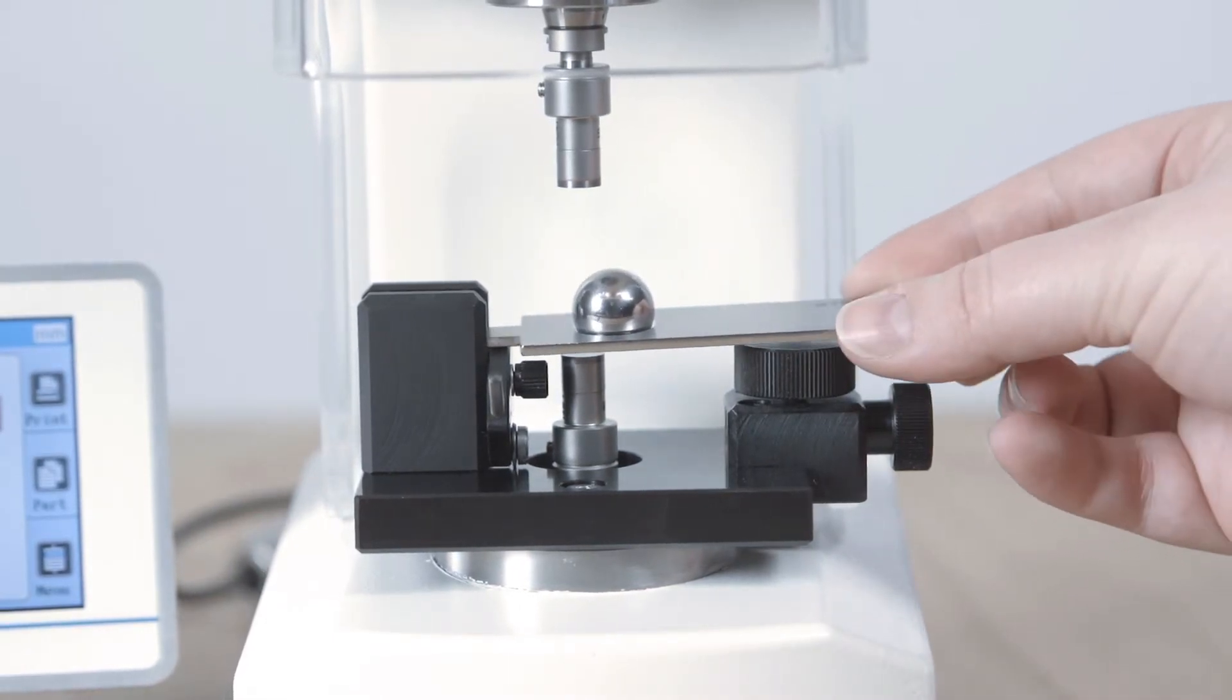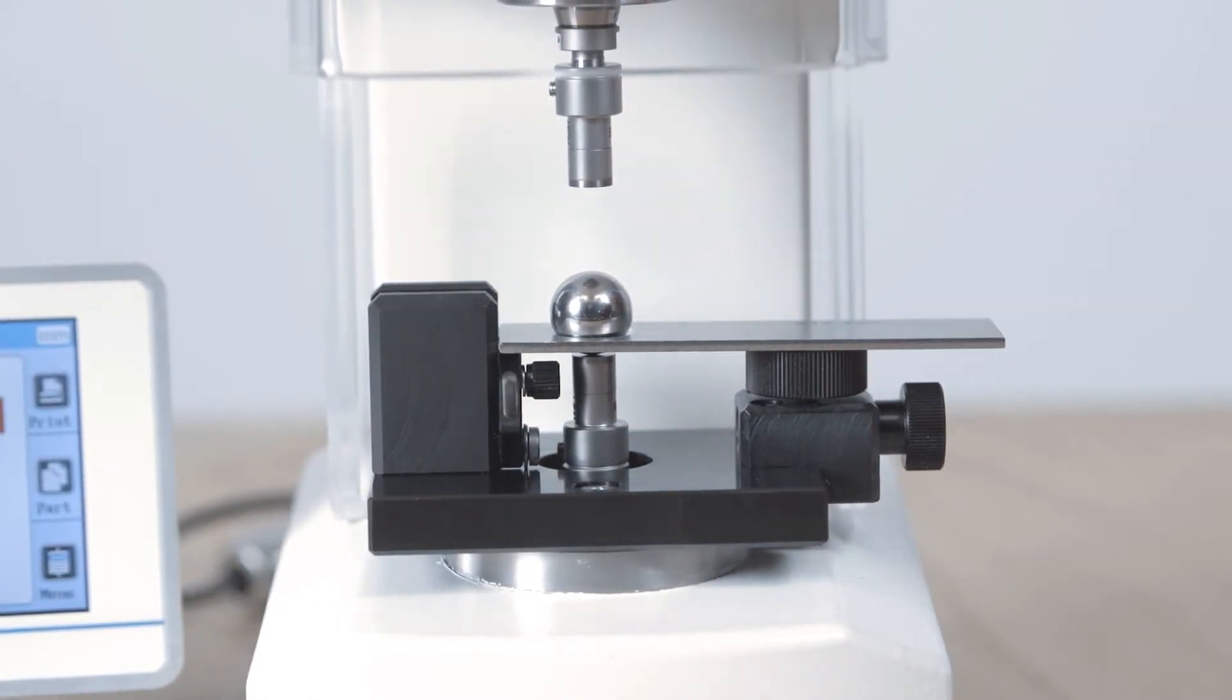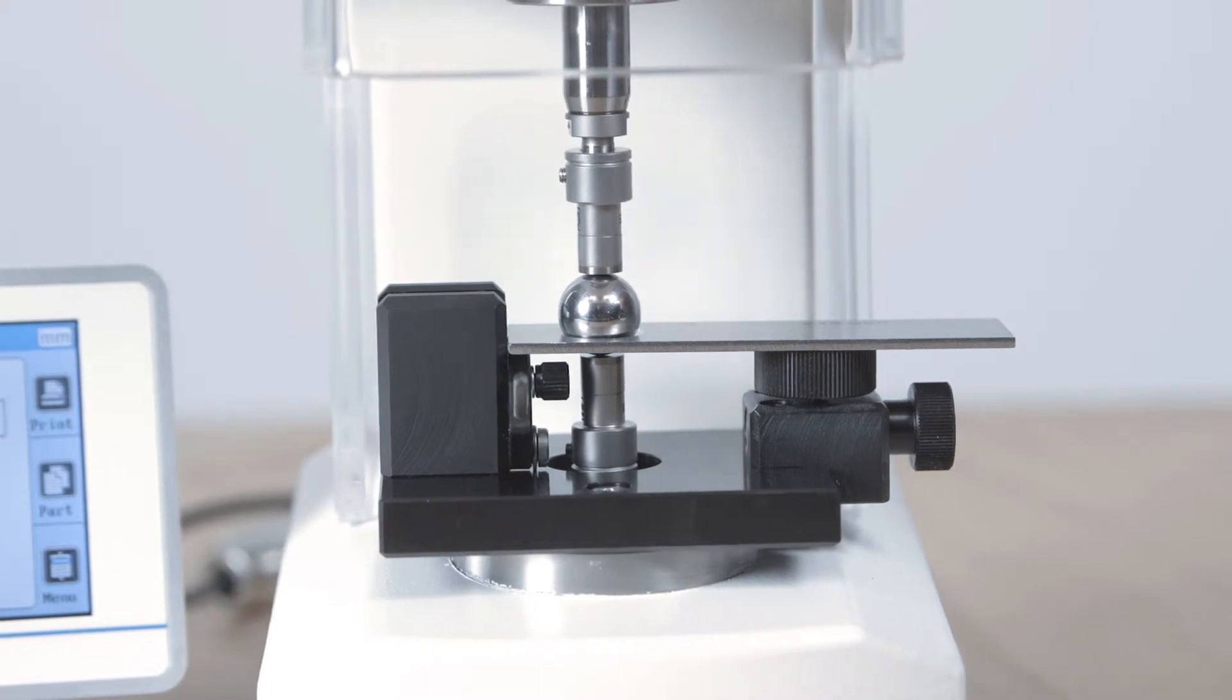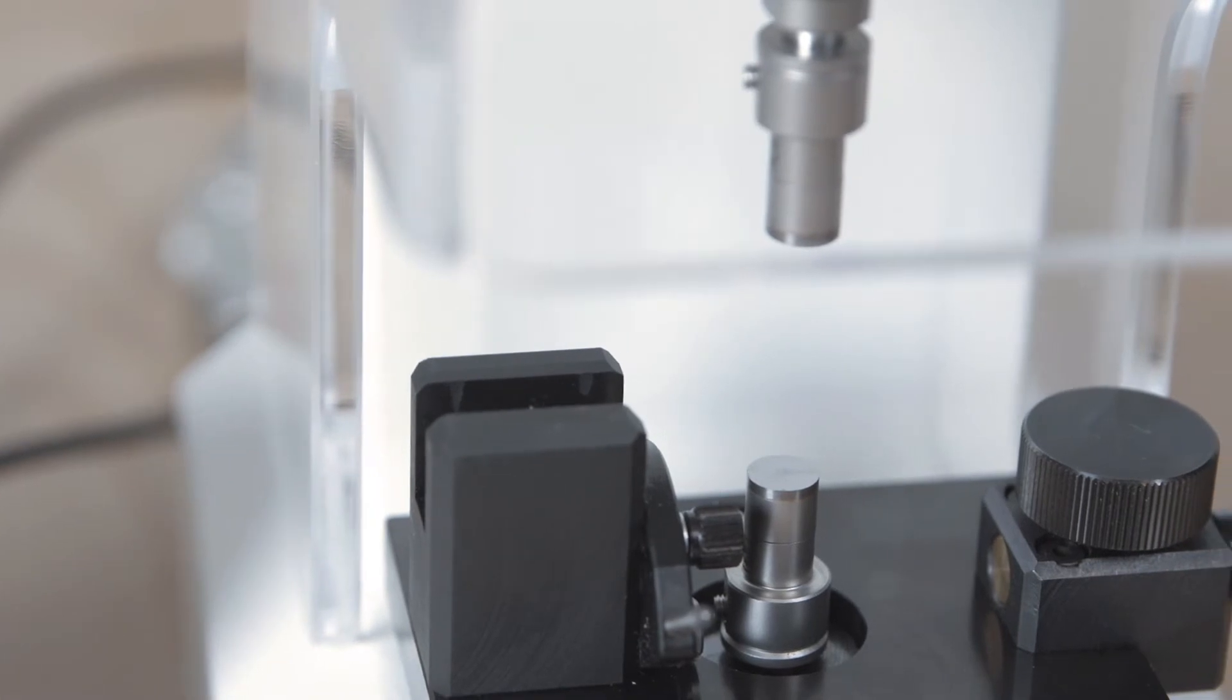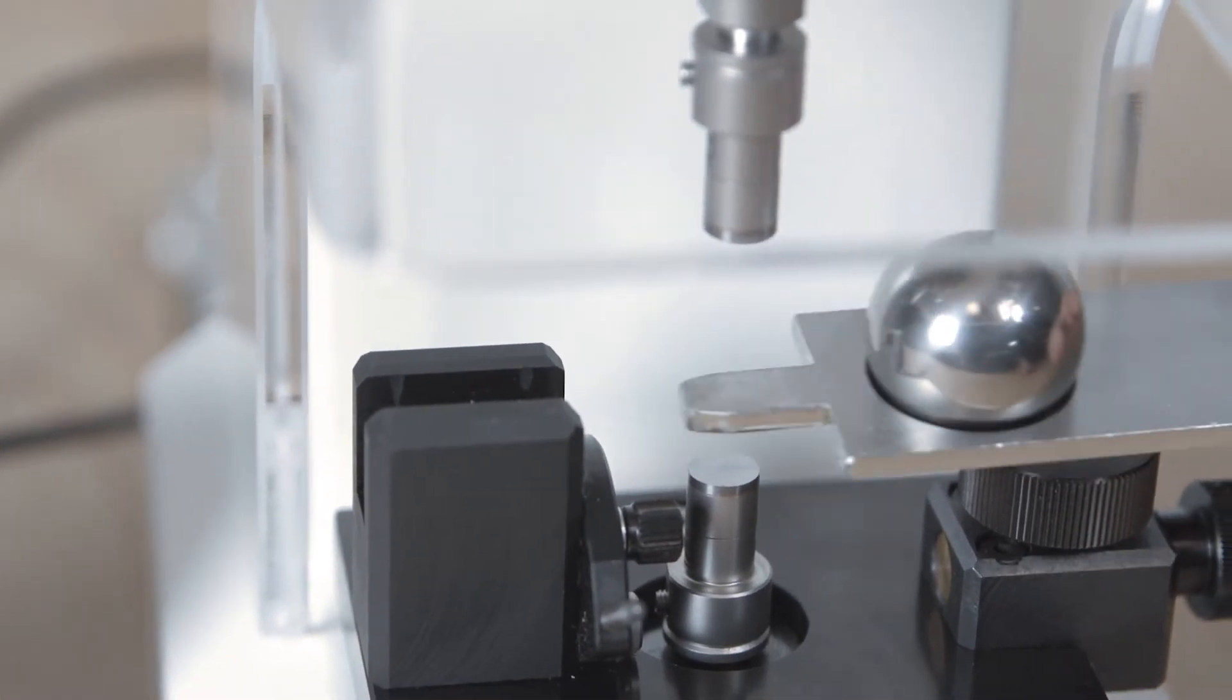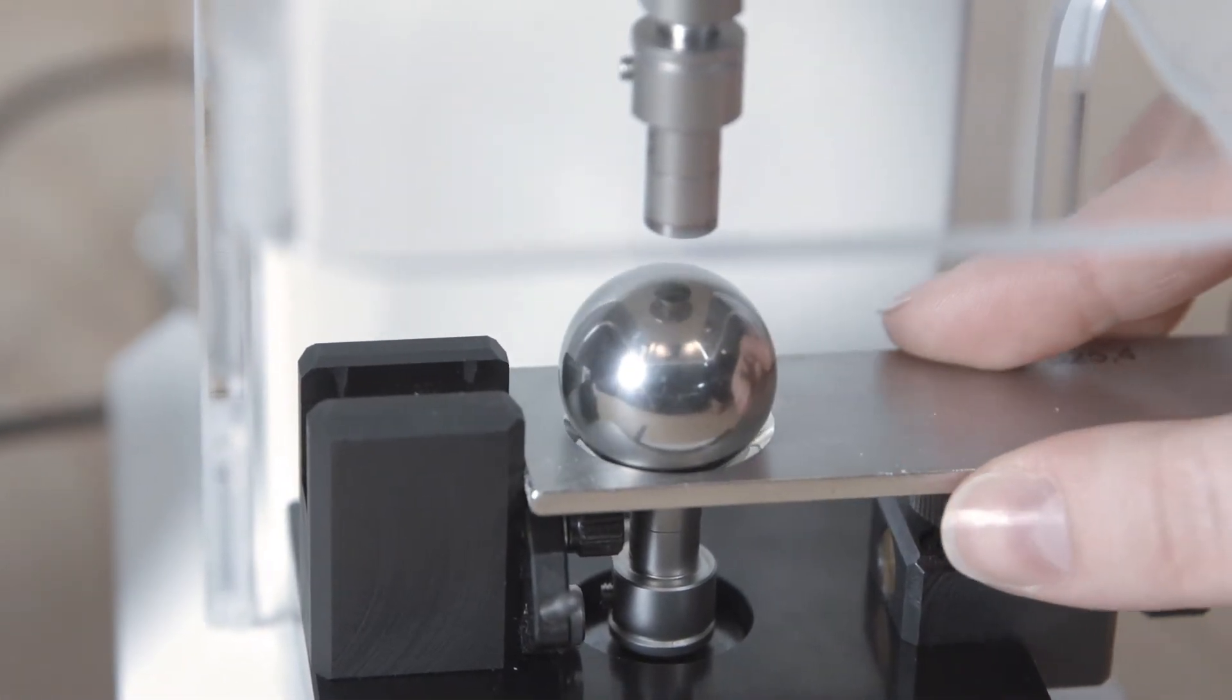FeinMess Suhl has developed a special height adjustable table to calibrate balls. With the help of holding plates that have been adjusted to the size of the balls, the various balls are positioned safely between the measuring surfaces with no thermal influences.